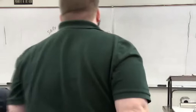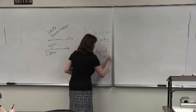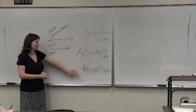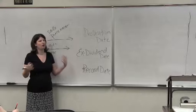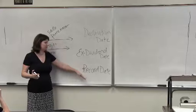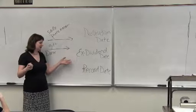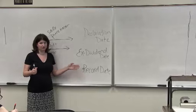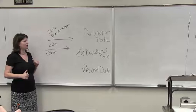One date we did not talk about, which we're going to cover today, is the ex-dividend date. The ex-dividend date is in between the declaration date and the record date. It's basically the day that the corporation gathers its documents and determines who the shareholders are. The record date is when they officially determine who gets the dividend. The ex-dividend date and the record date are usually a day or two apart.